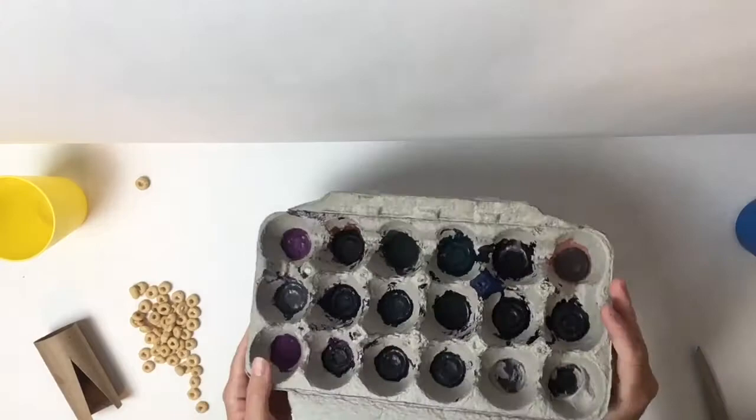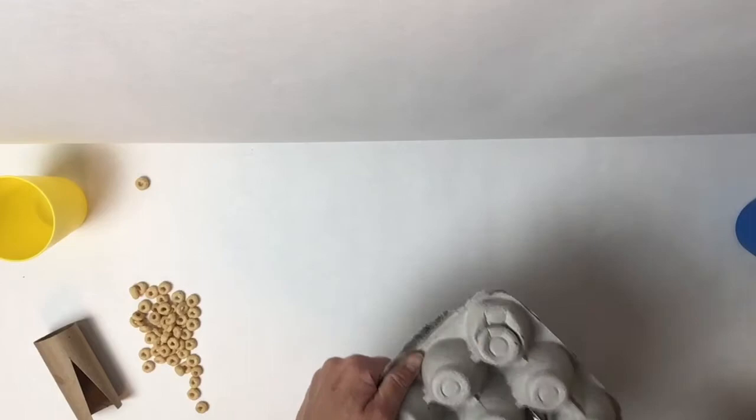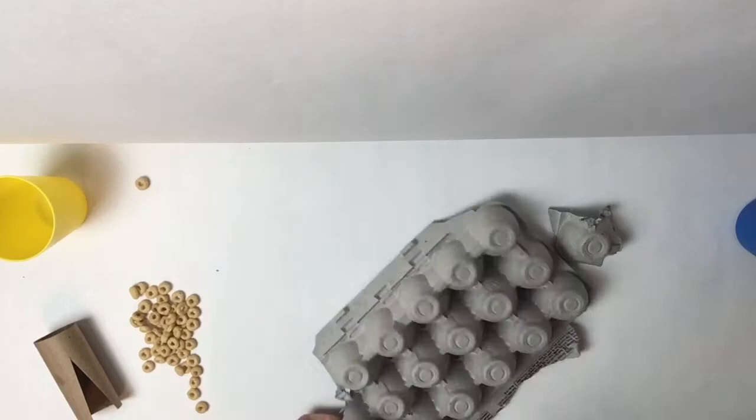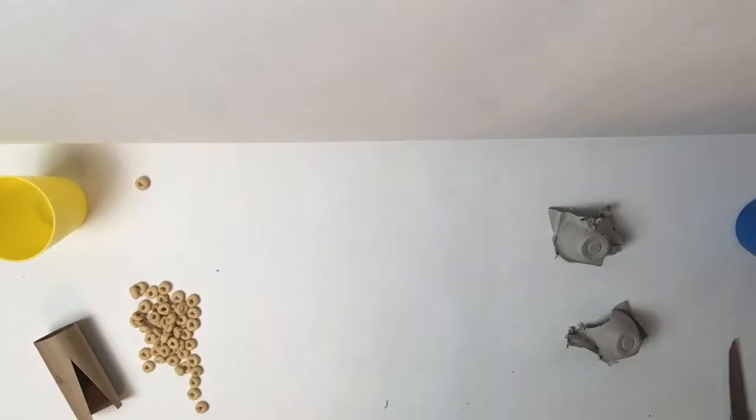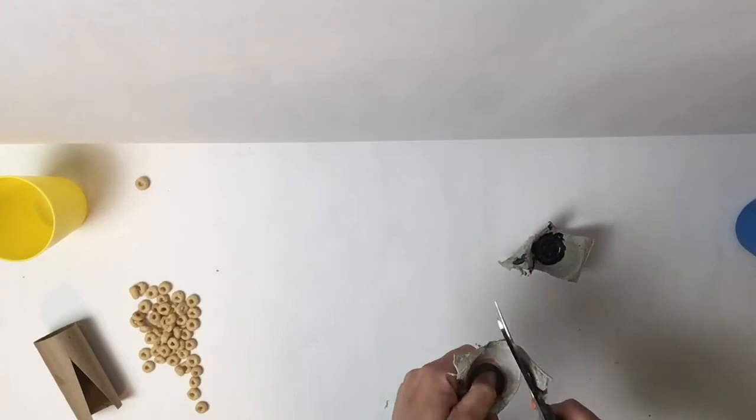Now I'm going to use a pair of scissors so mom and dad you might want to help with this part. It's a little tricky to cut out these circles so I'm just gonna cut a few out and see where it goes. Those don't look too great so I'm gonna give them a little trim. I'm not throwing anything away because I might use it later.